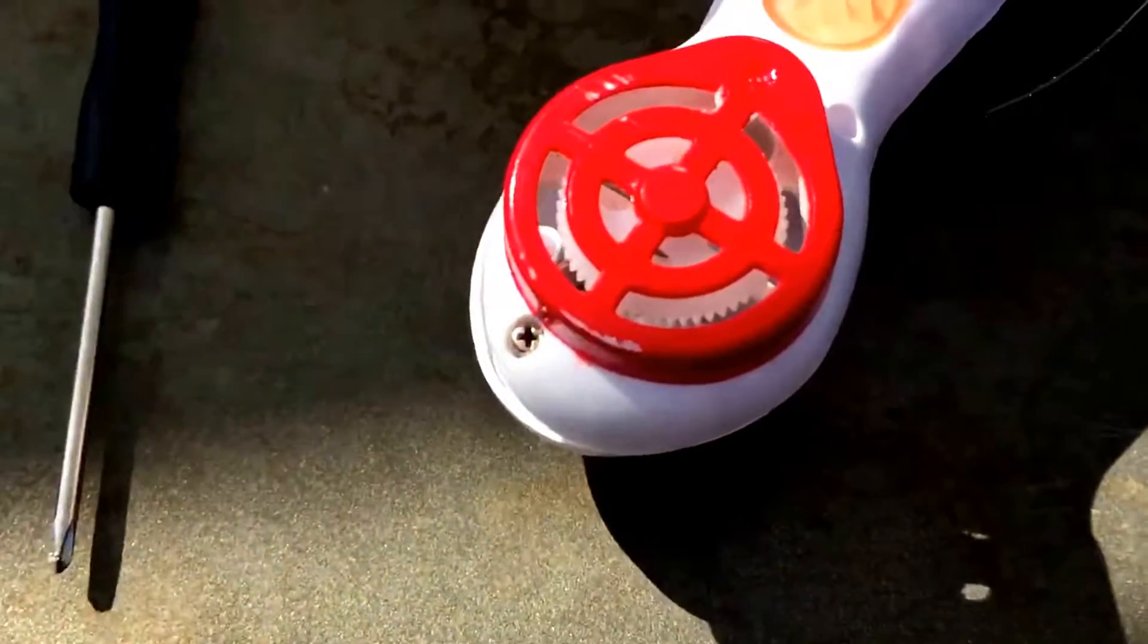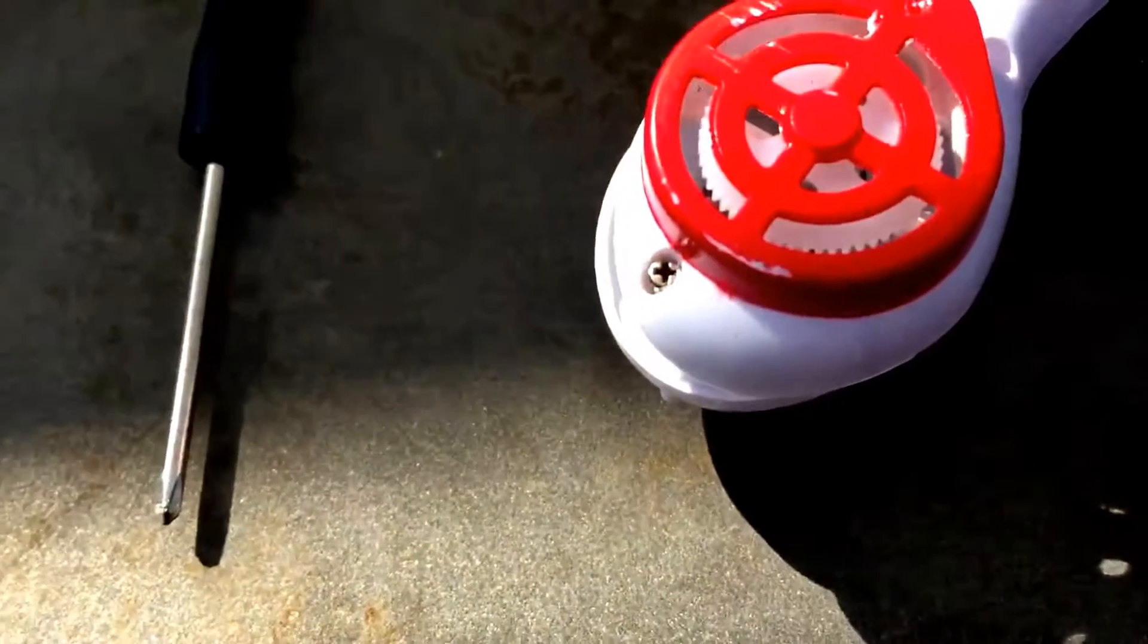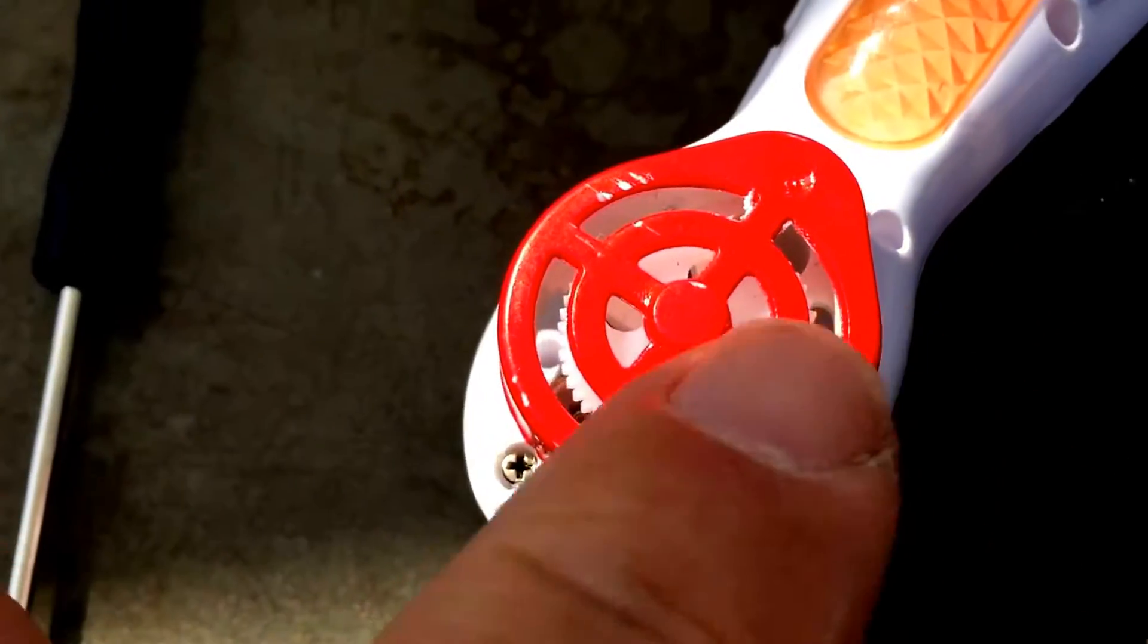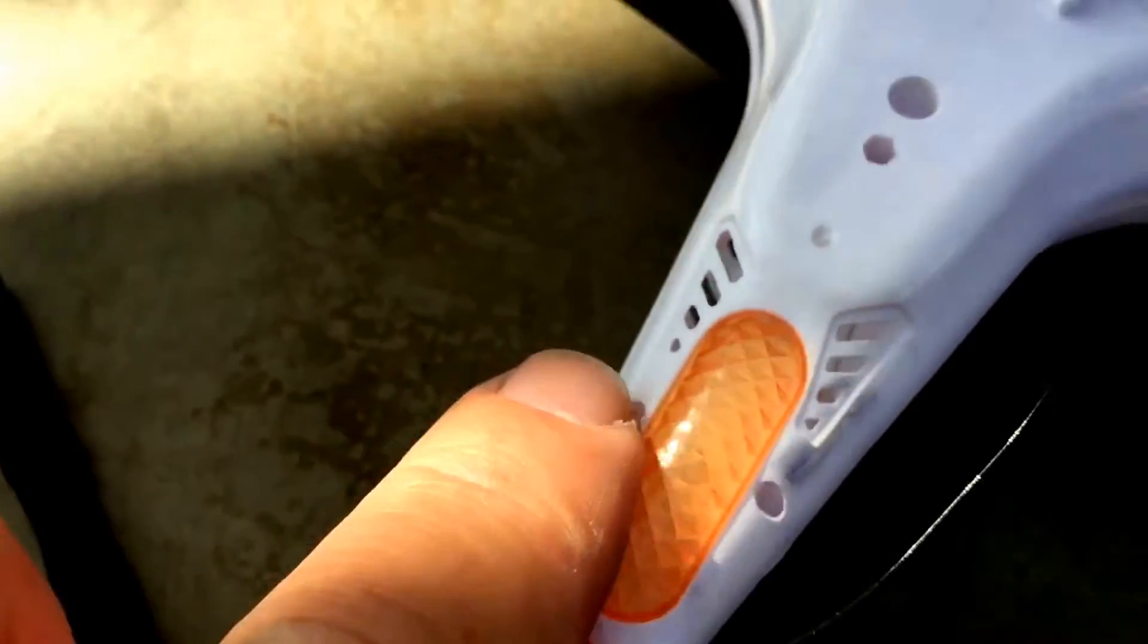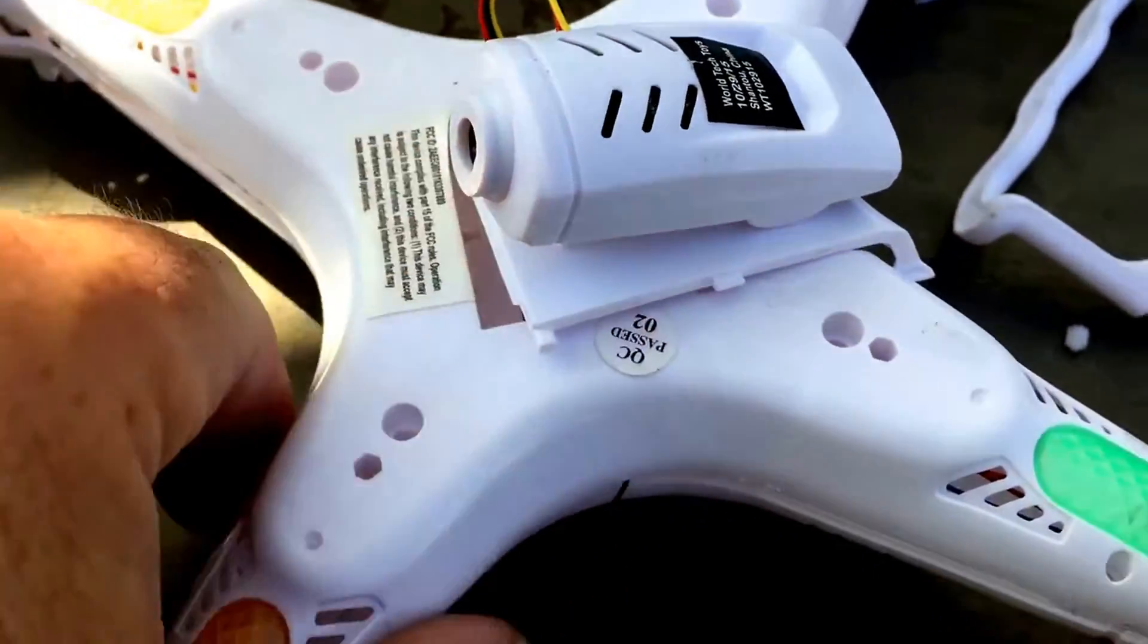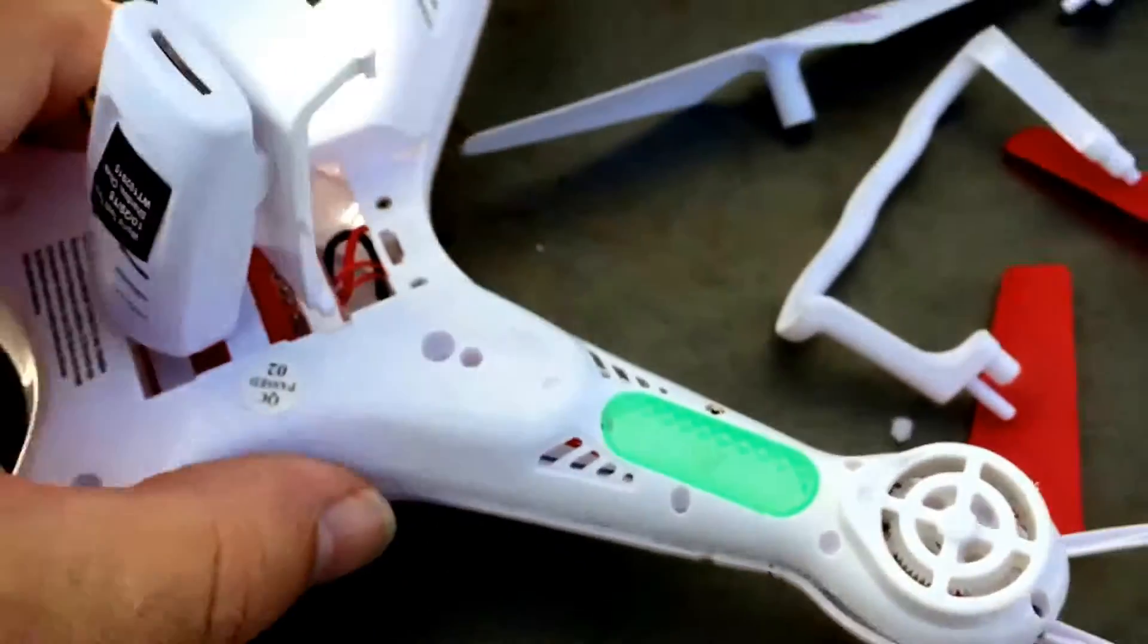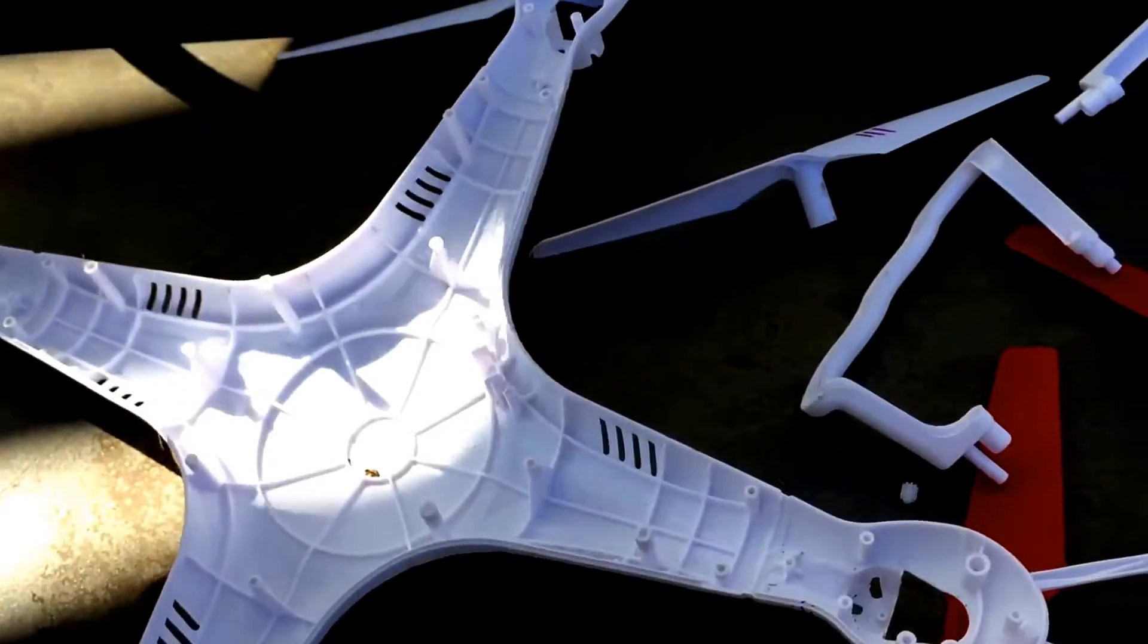As far as taking it apart, you have to take the whole clamshell design apart to get to it. You can't really just take one arm apart. There's a screw at the end, two screws here, just four screws that hold the legs on, and then there's a couple of screws inside here. Once you've done that, you can lift the whole clamshell apart.